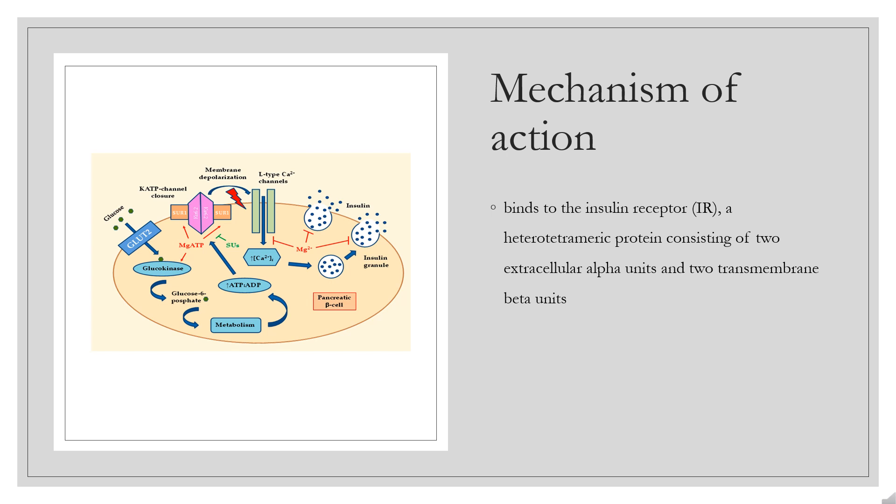AKT regulates the activity of glucose transporter 4 (GLUT4) and protein kinase C (PKC), both of which play critical roles in metabolism and catabolism. In humans, insulin is stored in the form of hexamers, however, only insulin monomers are able to interact with IR.